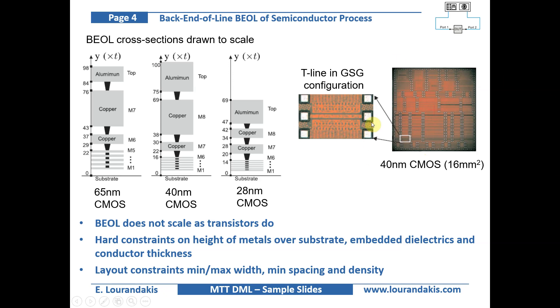On the right we see a typical transmission line design for on-wafer probing in GSG configuration at both ports of the transmission line. This design is part of a larger CMOS test chip in 40 nanometer technology.